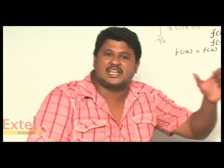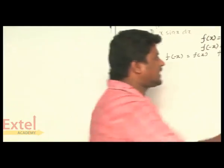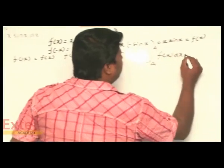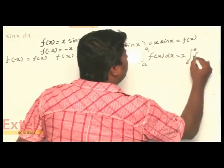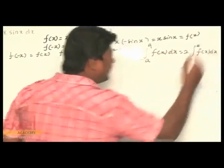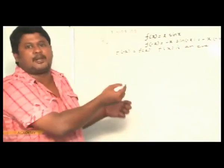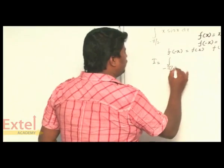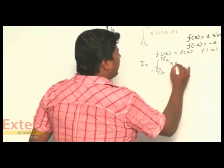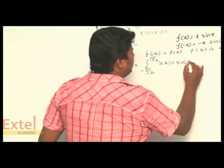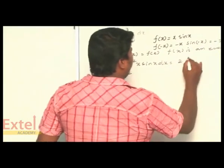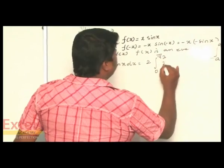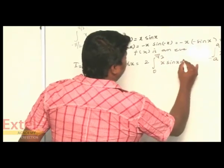If f of x is an even function, then by the property, the integral from minus a to a of f(x) dx can be written as 2 times the integral from 0 to a of f(x) dx. Now, applying this property here, the integral from minus π/2 to π/2 of x sin x dx is equal to 2 times the integral from 0 to π/2 of x sin x dx.